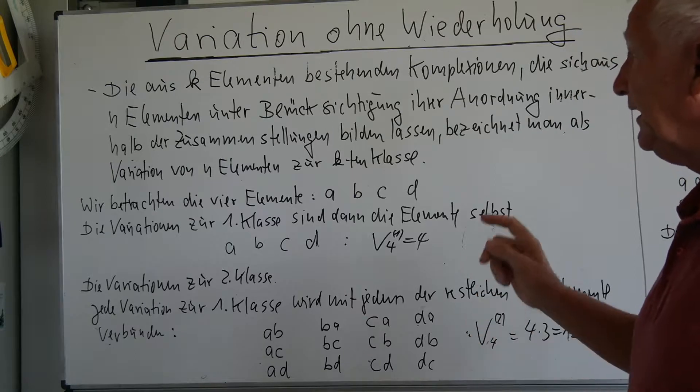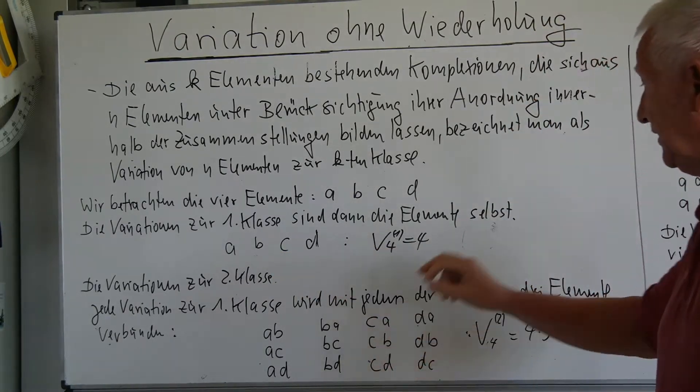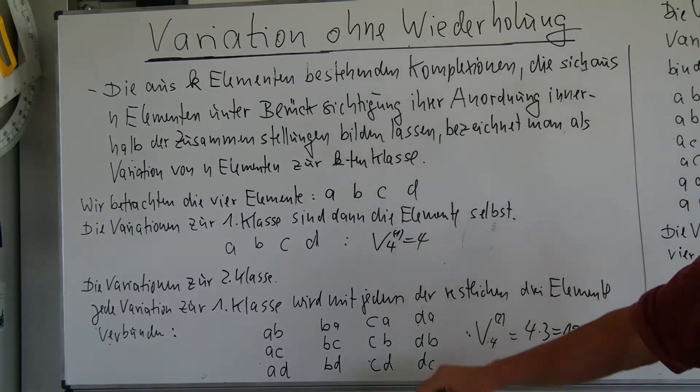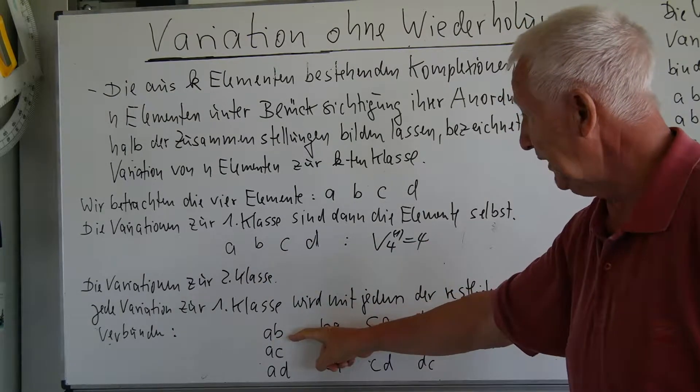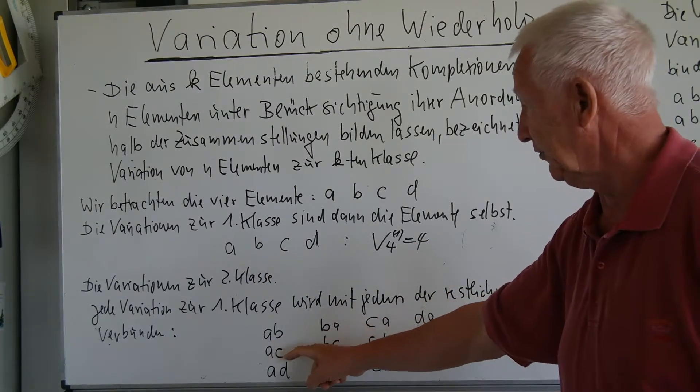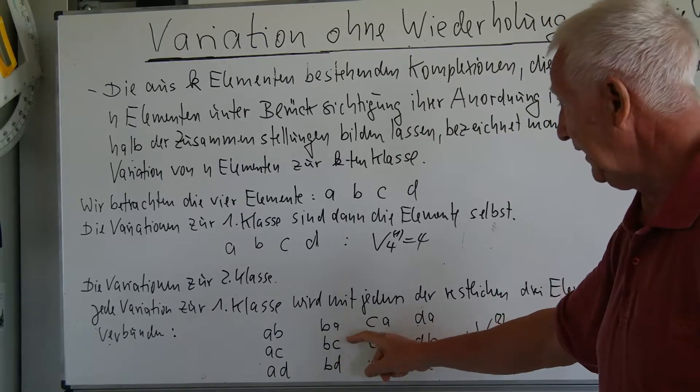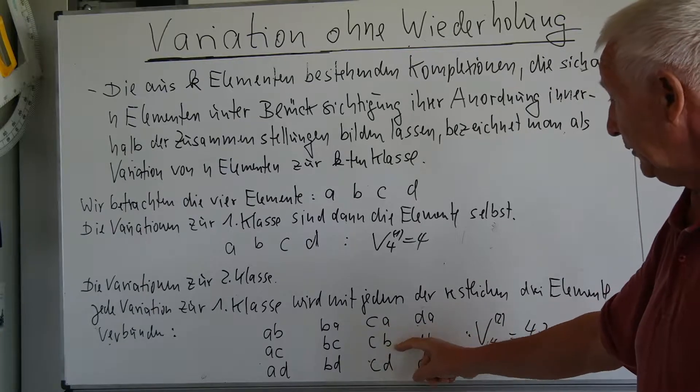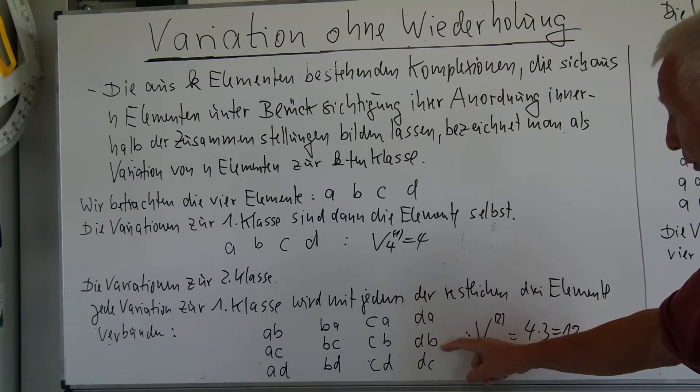The variation from the second class, we can find the variations in the first class with each of the rest of the three elements. That means here we have A, then I can still have A with B, A with C, A with D, then BA, BC, BD, CA, CB, CD, and D also with A, with B and with C.